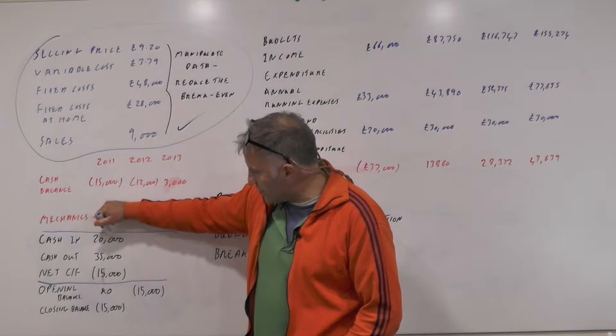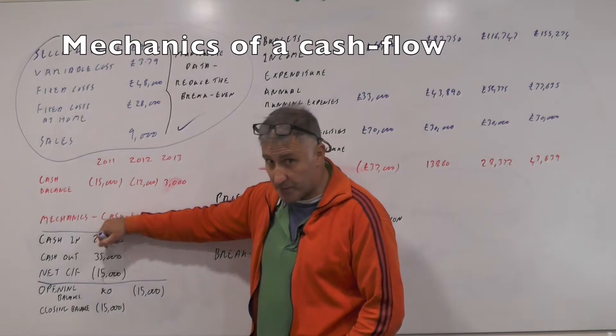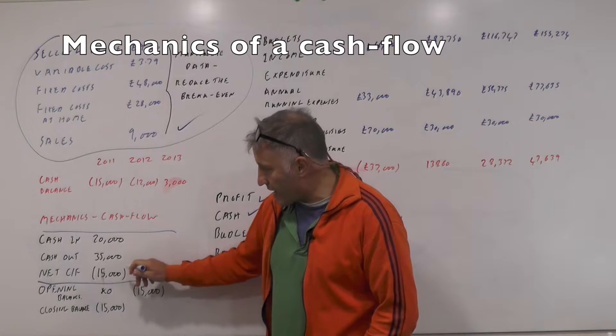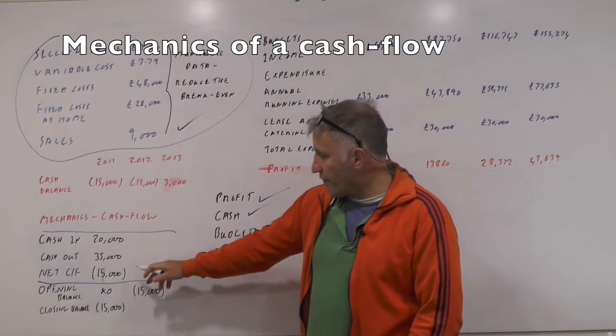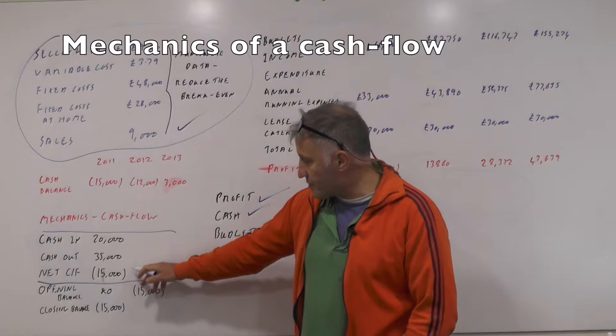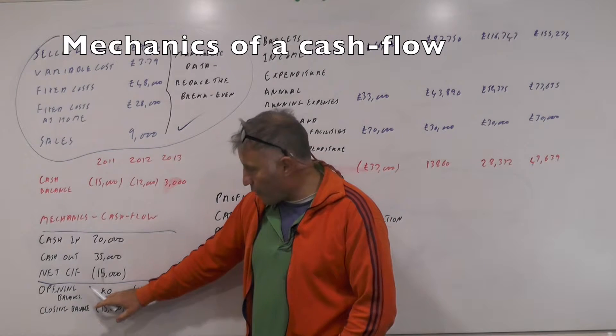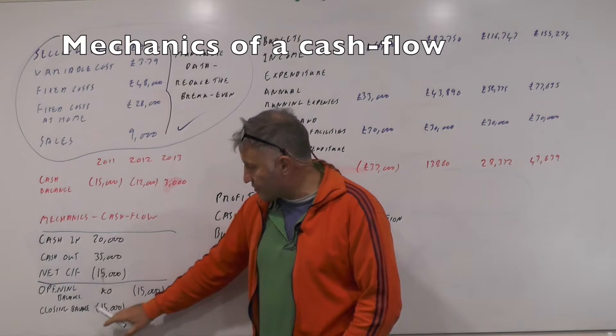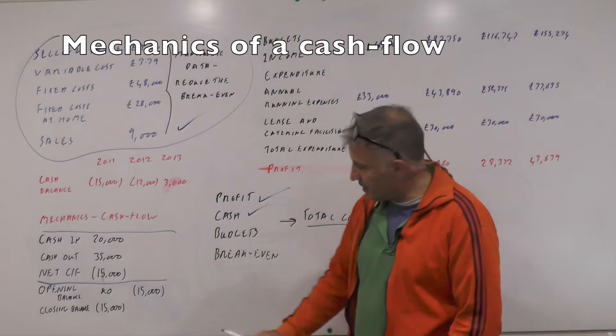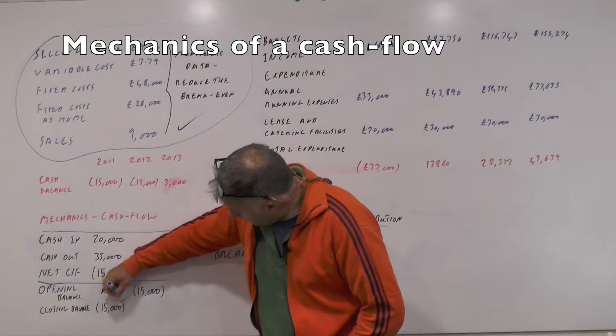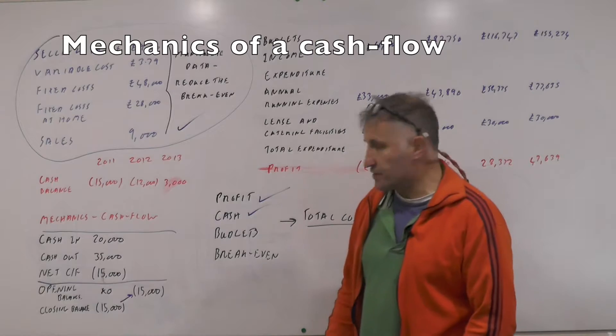So this month 20,000 pounds has come in, 30,000 pounds, 35,000 pounds gone out so therefore your net cash flow is minus 15,000 in brackets. We've got no opening balance at all so the closing balance into the month is minus 15,000. That will then become our opening balance for the next month.